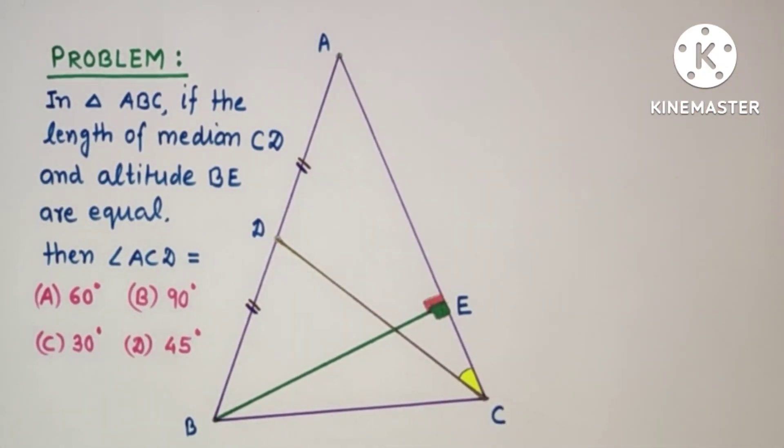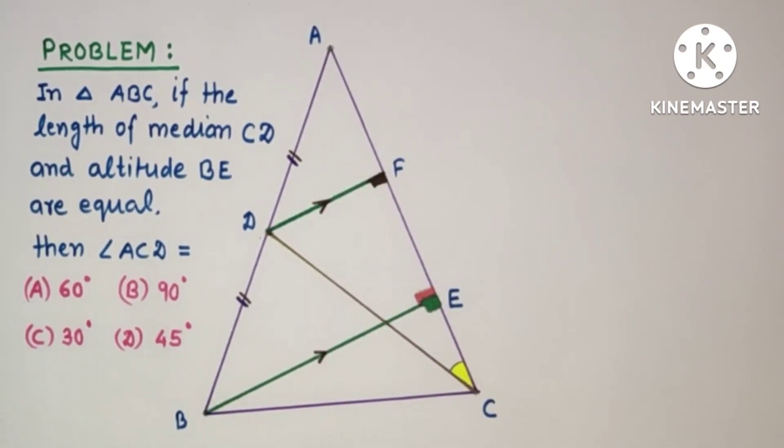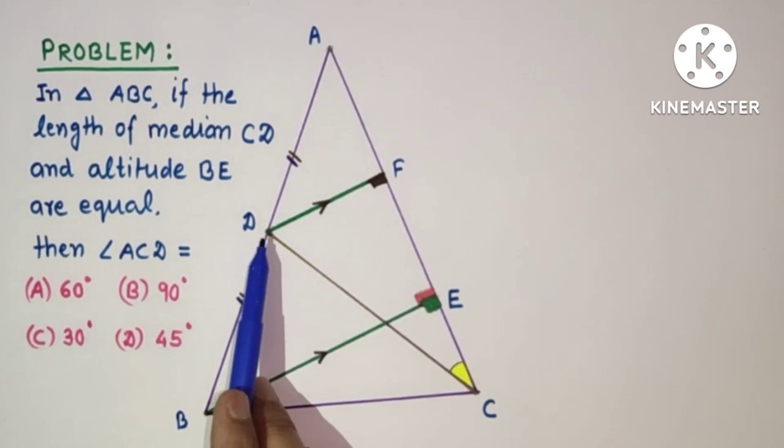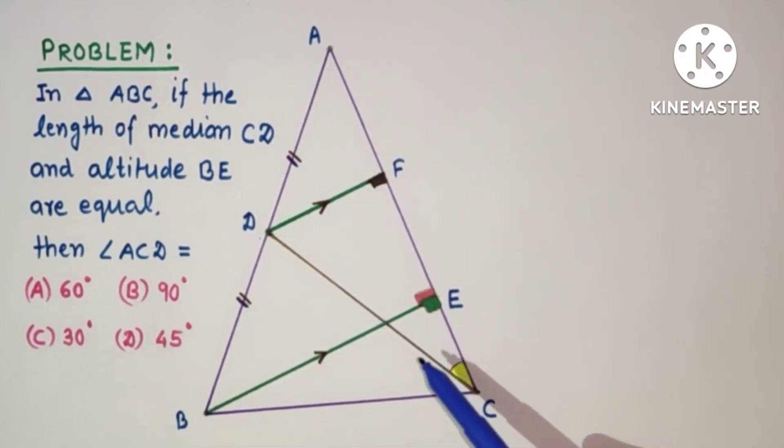We have to do some constructions. From point D draw DF parallel to BE. Here we have drawn DF parallel to BE. Now consider triangle ABE. Since D is the midpoint of AB, since CD is median and DF drawn is parallel to BE.